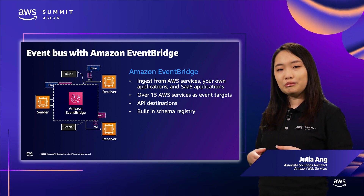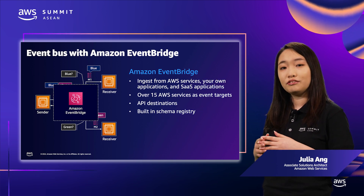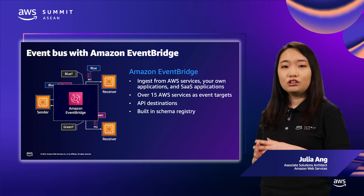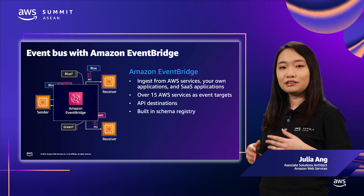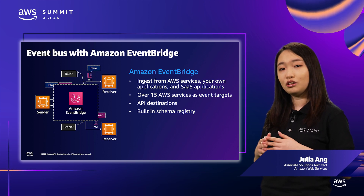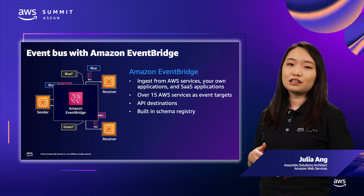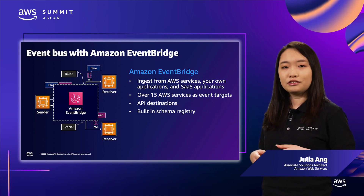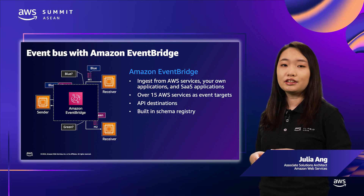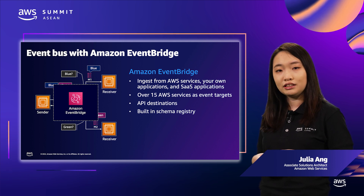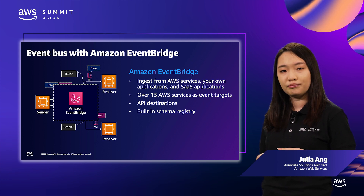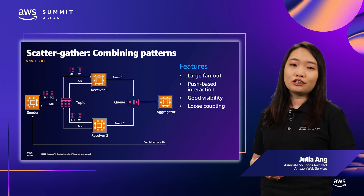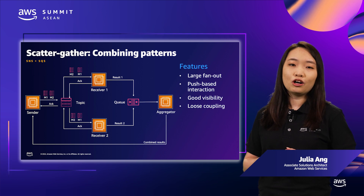This is still a tighter coupling compared to the SNS and SQS patterns we saw earlier, because of the additional overhead of writing routing rules. On AWS, you can implement this pattern using Amazon EventBridge. EventBridge supports JSON events and you can route to AWS services as well as any web service hosted on-premises or SaaS applications using API destinations. You can combine different patterns to achieve more complex flows.